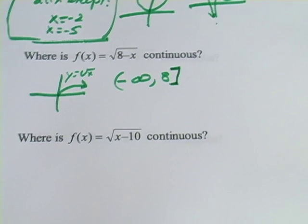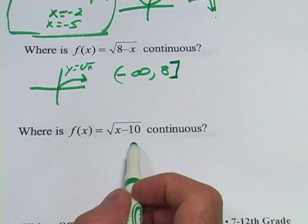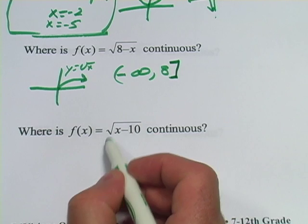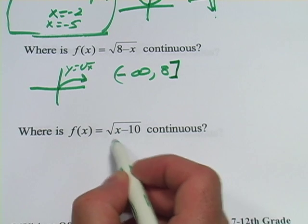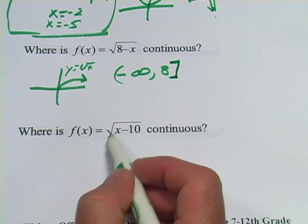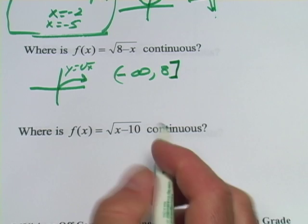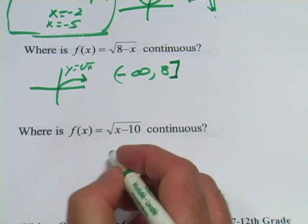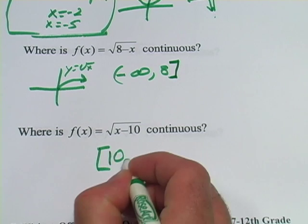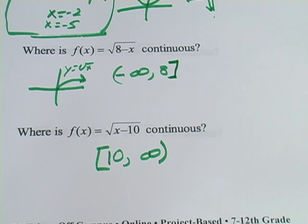All right, let's try another one. This one says, where is f of x equals the square root of x minus ten continuous? In this case, you can go ten and above, because if you put a ten in here, you get ten minus ten or zero. If you were to put a nine in here, nine minus ten, you'd get a negative number. So anything less than ten is going to give you a negative number under the radical sign, and we can't have that. So it's going to be continuous from ten on up. So we include ten, and we go up to infinity, and write it like that in interval notation.